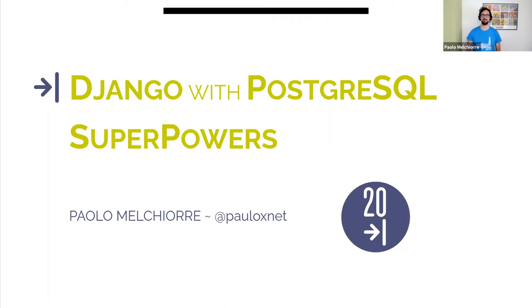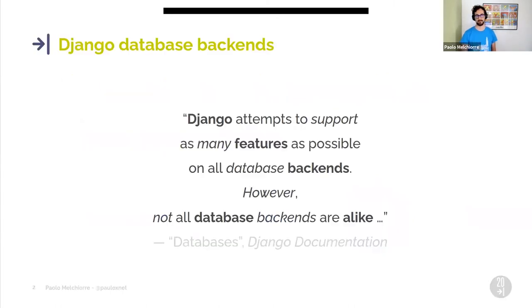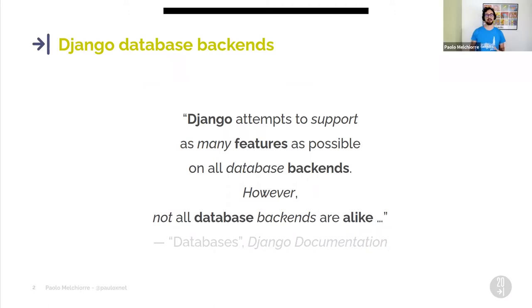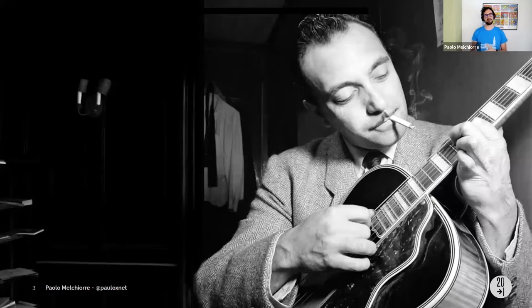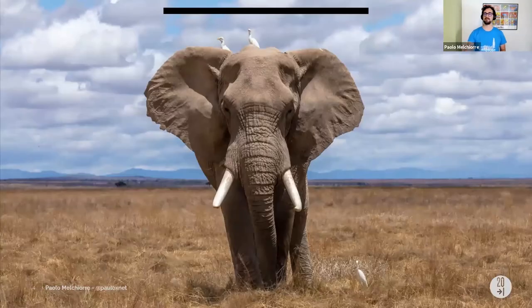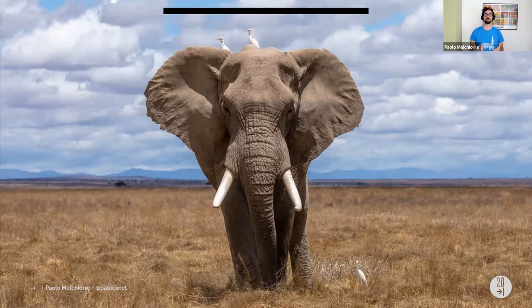Hello everyone, I'm very happy to be here with you all, even if remotely. In this talk we see how to use some great features of Postgres as a database in Django. Django attempts to support as many features as possible on all database backends. However, not all database backends are alike. Django per se is a database agnostic web framework, but real-world projects are not. Postgres is the richest feature of Django's supported databases, and we'll see in this talk how to use some of this superpower.